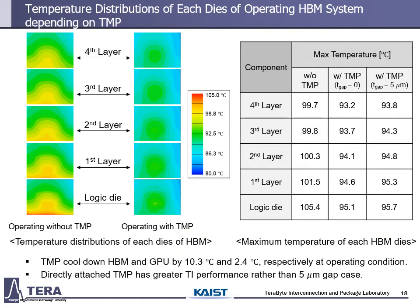This is the temperature distribution of each HBM die of the operating HBM system depending on TMP. As depicted, the without-TMP case's bottom part is hotter than other parts due to GPU thermal coupling. However, with TMP, it clearly prevents GPU thermal coupling. Not only does TMP prevent GPU thermal coupling, it also decreases the maximum temperature of HBM by up to 10.3 degrees Celsius by preventing thermal coupling. Furthermore, it prevents thermal coupling from HBM to GPU, so the maximum temperature of GPU also decreases by 2.4 degrees Celsius. Directly attached TMP has worse signal integrity performance than 5 µm T-gap cases at room temperature, but it has better TI performance.